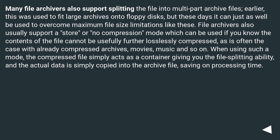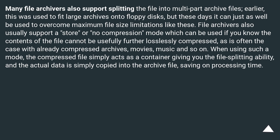Many file archivers also support splitting the file into multi-part archive files. Earlier, this was used to fit large archives onto floppy disks, but these days it can just as well be used to overcome maximum file size limitations like these. File archivers also usually support a store or no-compression mode, which can be used if you know the contents cannot be usefully further losslessly compressed — as is often the case with already-compressed archives, movies, music, and so on.